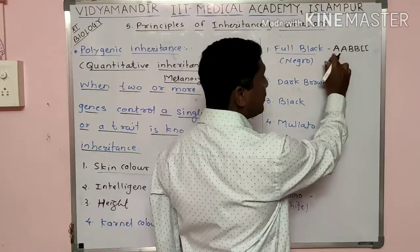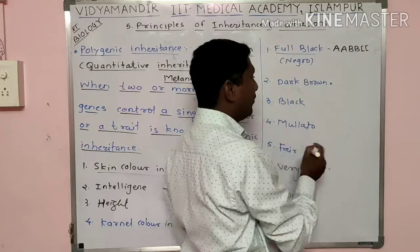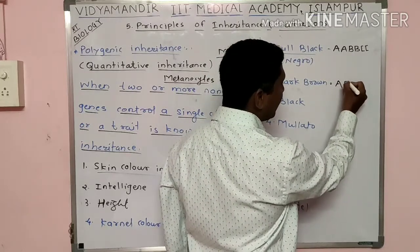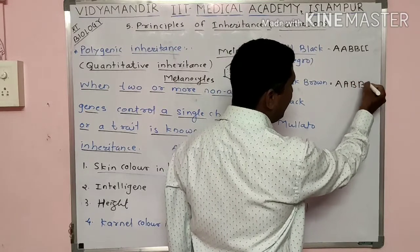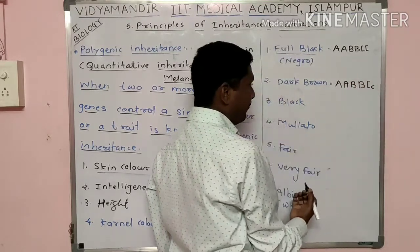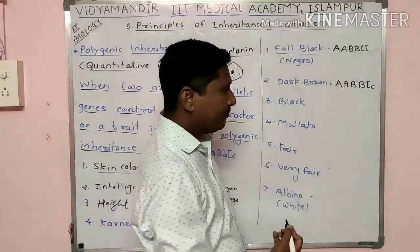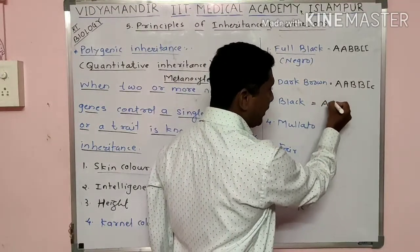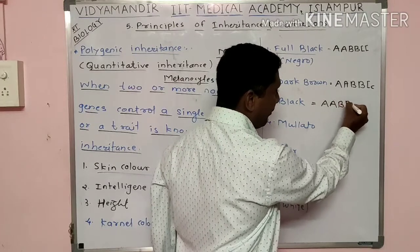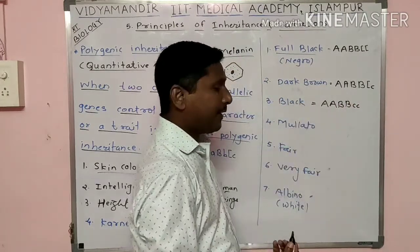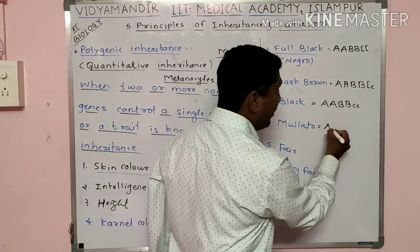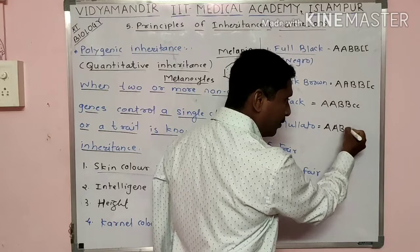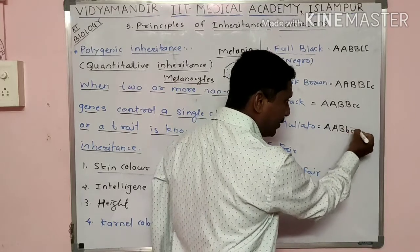When the genotype is capital A capital A, capital B capital B, capital C small c — that is with one recessive allele — the color is dark brown. When the genotype has capital A capital A, capital B capital B — and certain combinations with small letters — the character is defined accordingly. The more dominant alleles present, the darker the skin.